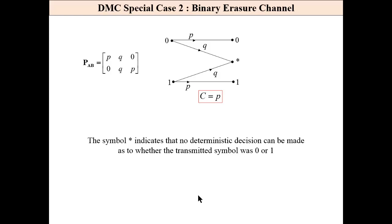A binary erasure channel. We have 0 and 1 at the input. Two letter alphabets and three letter alphabets at the output. We have asterisk, which means that no deterministic decision can be made as to whether the transmitted symbols 0 or 1. The capacity of this channel is p.